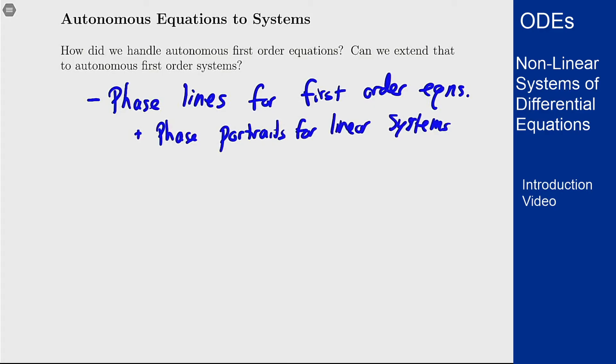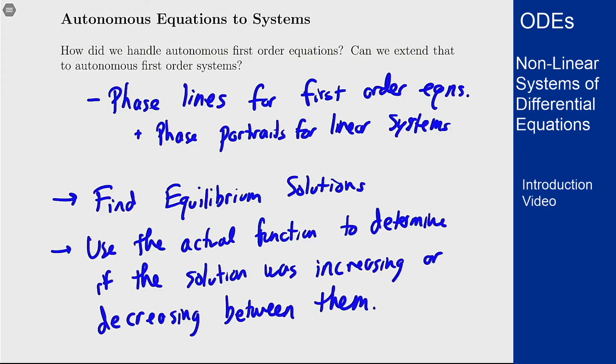What's the idea of these phase lines? Well the idea was I would find equilibrium solutions and determine whether the solution would be increasing or decreasing between them to tell which way it was going to go between those points. We'd find equilibrium solutions and then use the actual function to determine whether it was increasing between them.